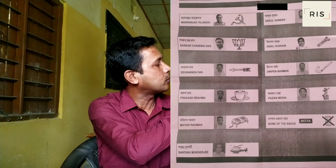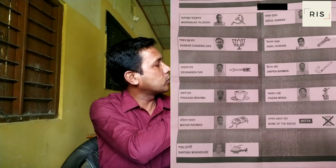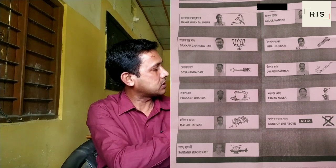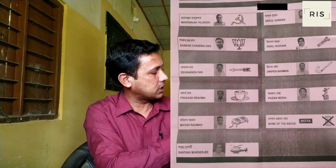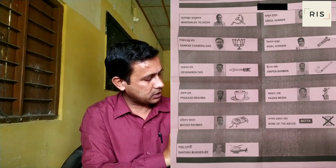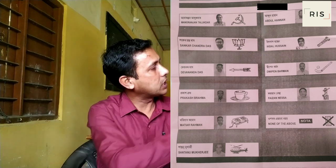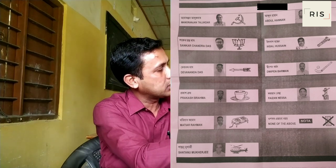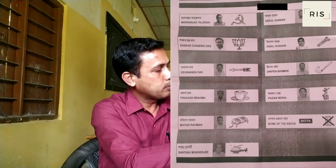The names are: Sanchar Chandrath, Prakash Bramo, Mottir Rahman, Makharji, Abdul Hanhannan, Iqbal Hussein, and Deepan Burma.